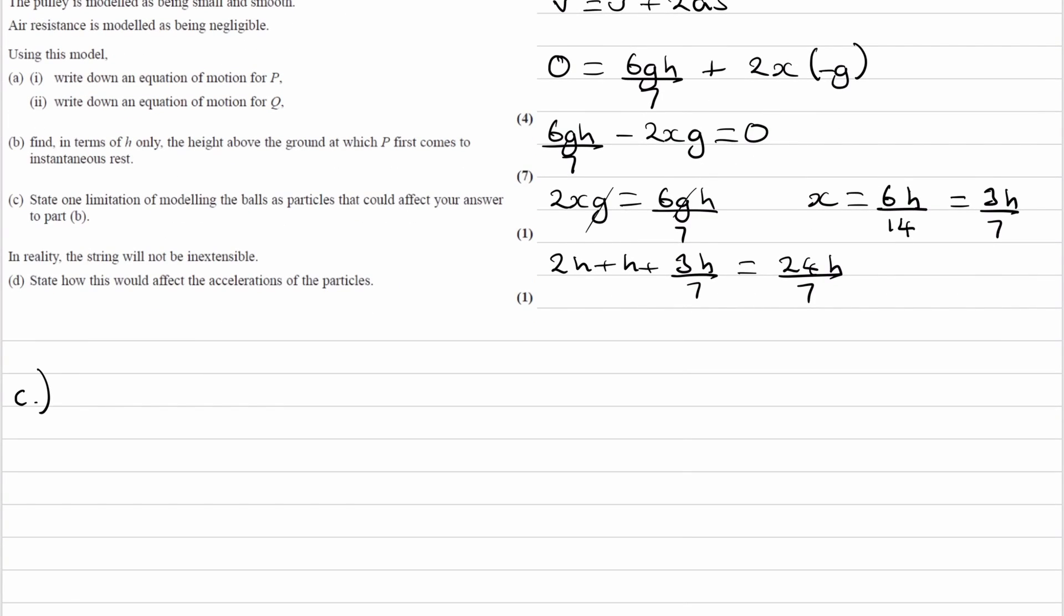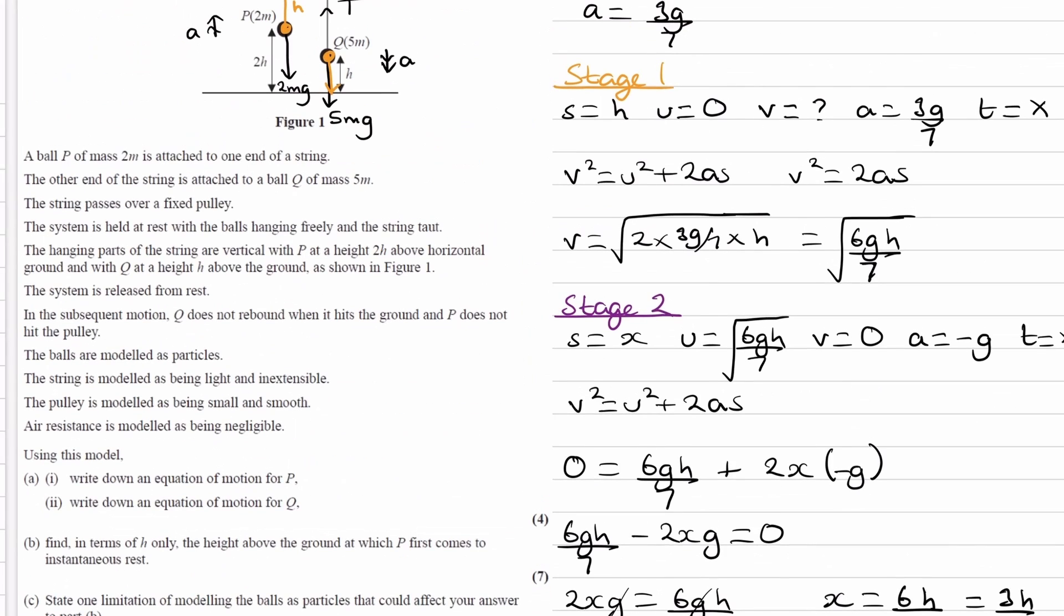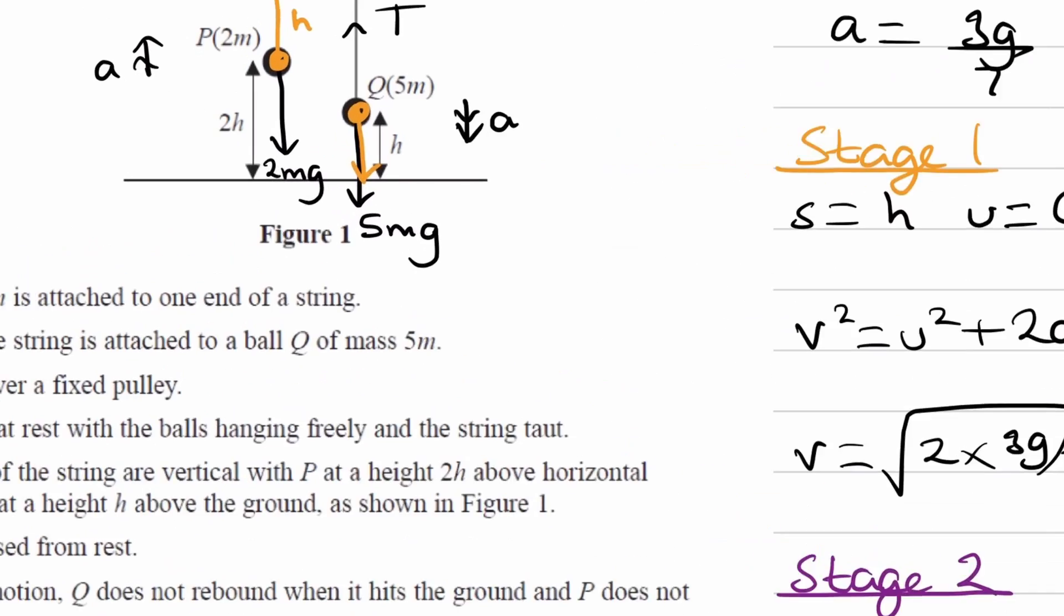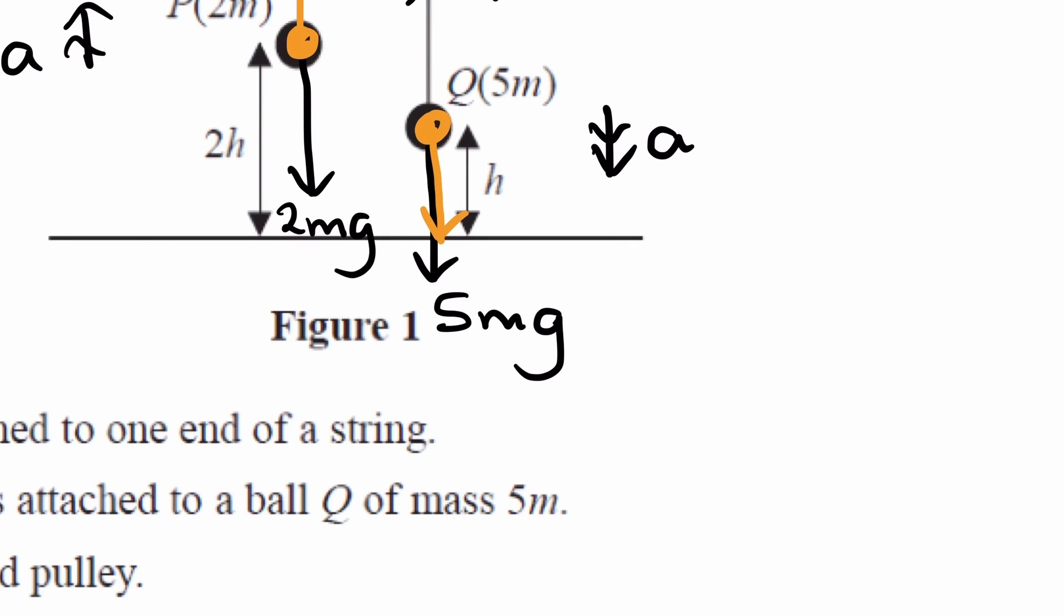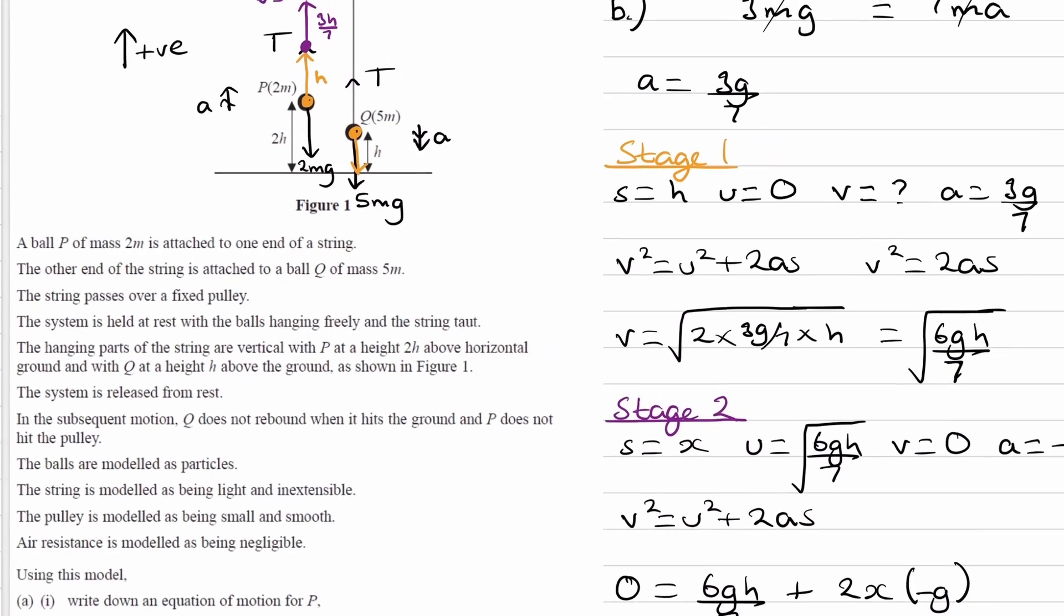Part C. State 1 limitation of modelling the balls as particles that could affect your answer to part B. So if we're modelling the balls as particles, we're not considering their dimensions. So if the height above the ground, in reality, we're considering to be from the centre of mass of object Q all the way to the ground, well that would mean that object Q does not actually fall a full distance of H. It falls a full distance of whatever this is, whatever H is minus the radius of the ball. H will be the radius of the ball plus the actual height the bottom of the ball is from the ground. So basically, in reality, the distance that Q falls to the ground wouldn't be exactly H. So that could be what we write down for part C.